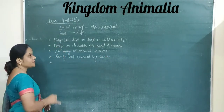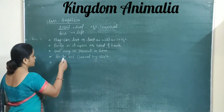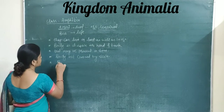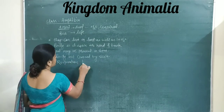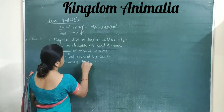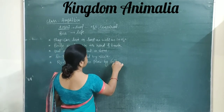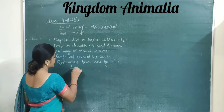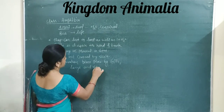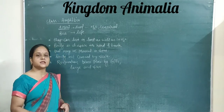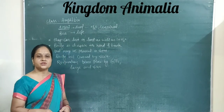Respiration in this Amphibian group can occur in three different ways. Respiration takes place by gills, lungs, and skin. For example, the frog also respires through the buccopharyngeal cavity.